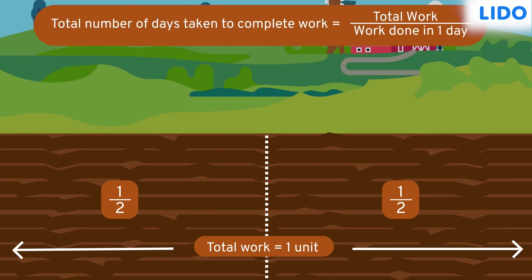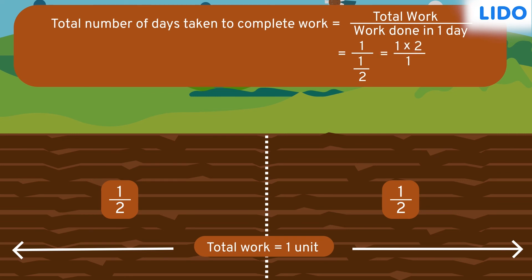And the total time they'll take to finish the work together can be calculated by dividing the total work done by the amount of work done in one day. The total work done is taken as one unit and the amount of work done by Rahul and Vivek together in one day is equal to half. One divided by half is two and therefore together they'll take two days to plough Rahul's field. So, let's see what happens.